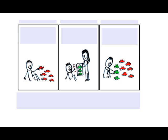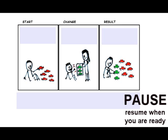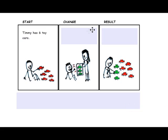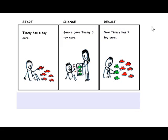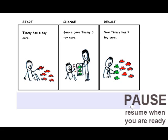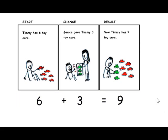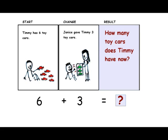Use these pictures to identify the start, change, and result. Write a sentence to describe each frame. Write a number sentence to describe what happens in the picture. Identify the question asked when one value is unknown.